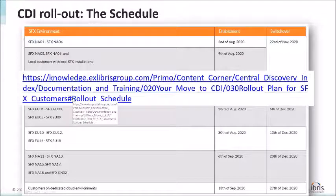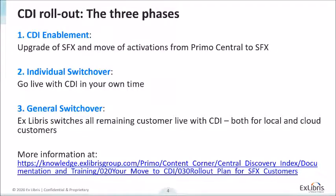I'm also posting the schedule of when we will start enabling cloud customers. The CDI enablement — the first of the three phases — is actually a little bit different for cloud customers and for local customers. For cloud customers, the CDI enablement will be handled by ExLibris and will start at the beginning of August and run until the middle of September. For local customers, they will need to run the CDI enablement on their local server using tools and documentation that we provide, and they will be able to start from the 9th of August onwards. The individual switchover happens whenever you want, and the general switchover will be November and December.